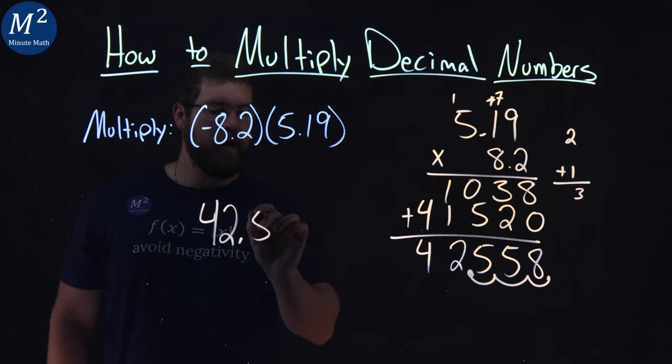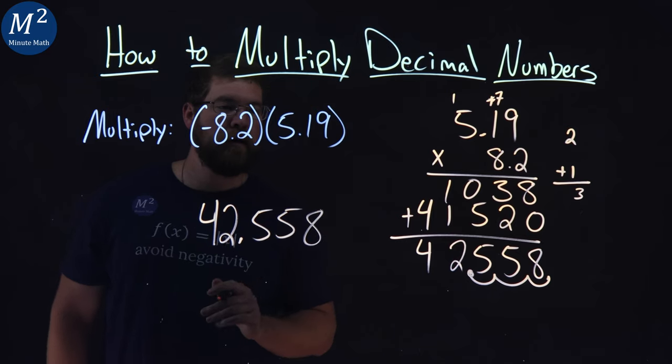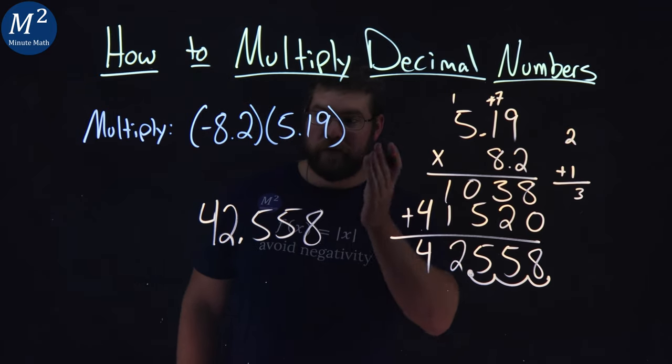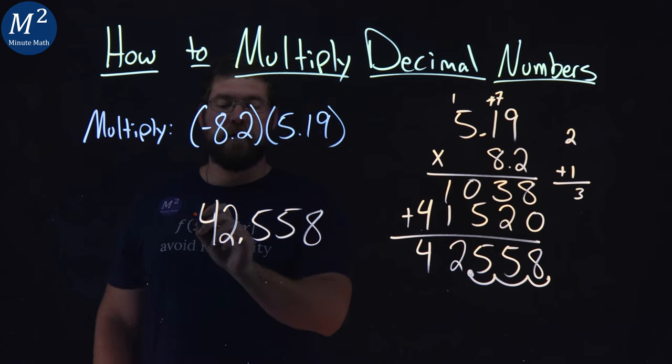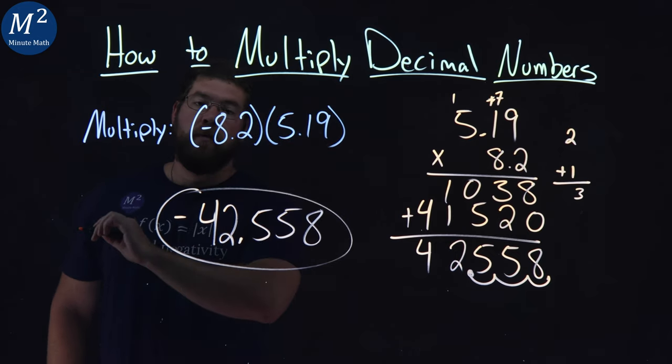So I'll rewrite my number, 42.558. And I know what you're thinking. Isn't it supposed to be negative? It is. Negative out front here. Negative times a positive is a negative.